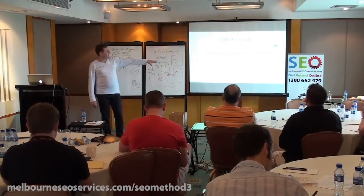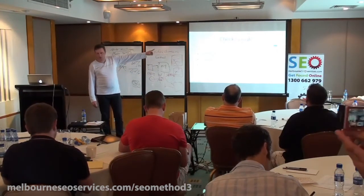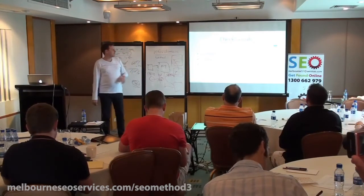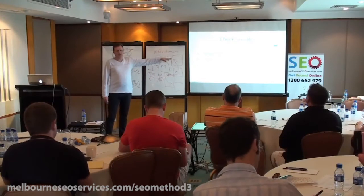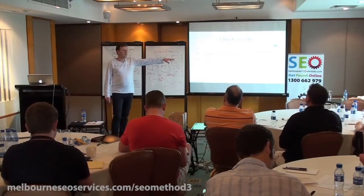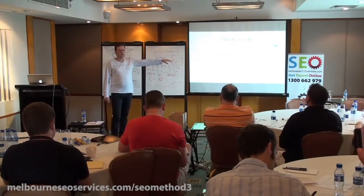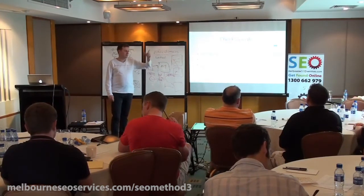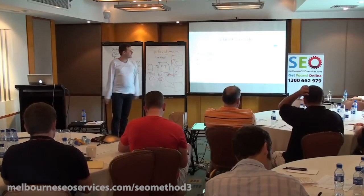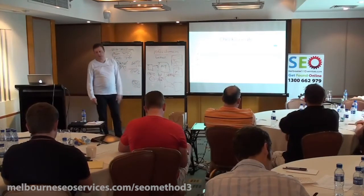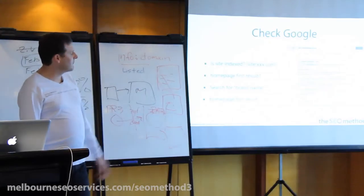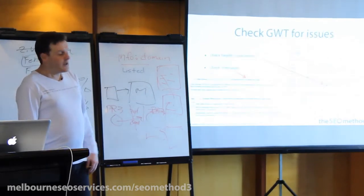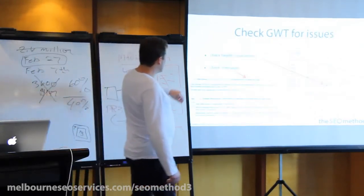Then we also search for the brand name. In this case, Creative Smiles — I'll talk about them in a sec. We'd search for Creative Smiles as the brand: do they come up first? The only time this doesn't work is if their brand is pretty much a generic term — like 'blue widget' — and there are just lots of them out there. They might not come up first. We want to make sure their homepage is the first result. Then we go in and check Webmaster Tools.